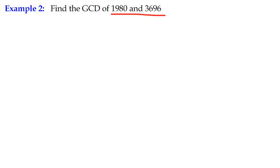We're repeatedly using the division algorithm until we can find the greatest common divisor of two numbers. We're used to doing this with small numbers — we could probably mentally work out the highest common factor or greatest common divisor of numbers like 12 and 20. Not so much in this example, where we're trying to find the GCD of 1,980 and 3,696. A bit harder to do, but fortunately the Euclidean algorithm helps us.